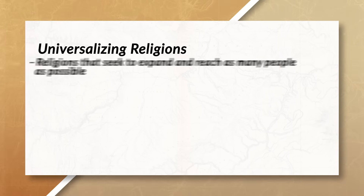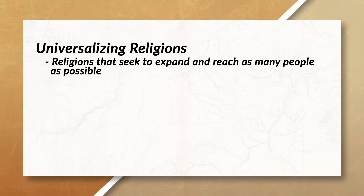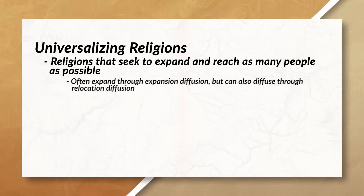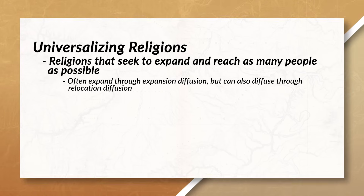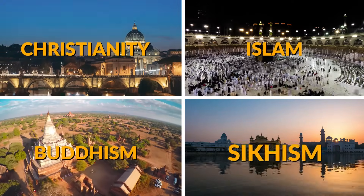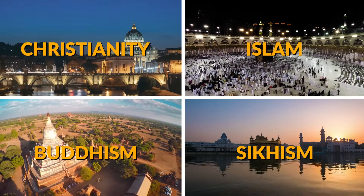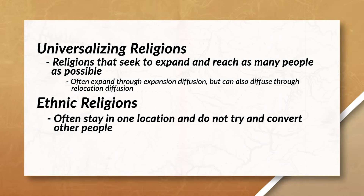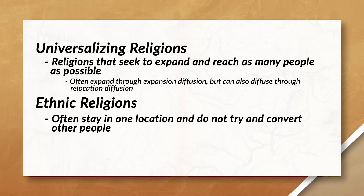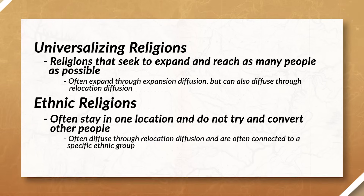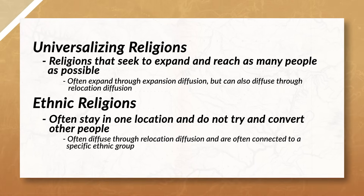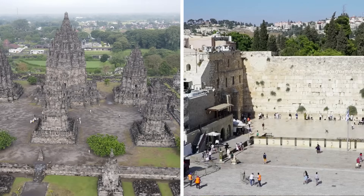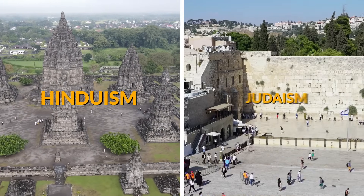Universalizing religions are religions that seek to expand and reach as many people as possible. Oftentimes these religions will expand through expansion diffusion, but can also diffuse through relocation diffusion. In this video, we'll be scratching the surface on Christianity, Islam, Buddhism, and Sikhism — all examples of universalizing religions. We will also examine ethnic religions, which often stay in one location and do not try to convert other people. These religions often diffuse through relocation diffusion and are connected to a specific ethnic group. The two ethnic religions we'll talk about are Hinduism and Judaism.